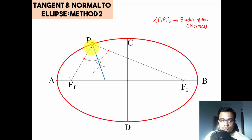And perpendicular to this normal you can have the tangent over here. Obviously this angle is going to be equal to 90 degrees. That's it, that's the tangent.